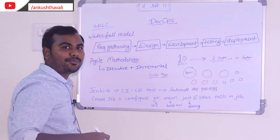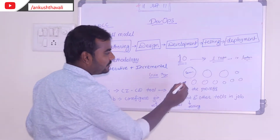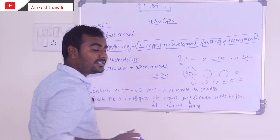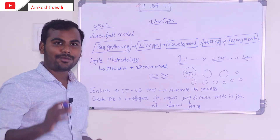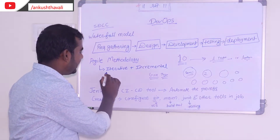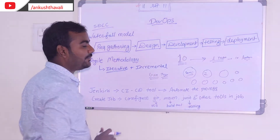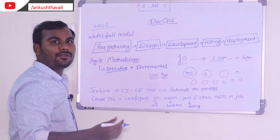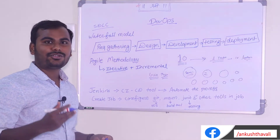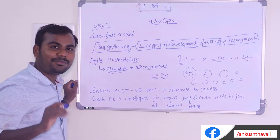Once we have the requirement for the login page, we deliver it in Sprint 1 and tell the client how it is working. If the client is happy, he will ask you to work on the second screen, the second functionality. This is what is meant by iterative — we take the requirement, do designing, development, testing, and deployment, but only for Sprint 1. Then again for Sprint 2, maybe the list of customers or another feature.